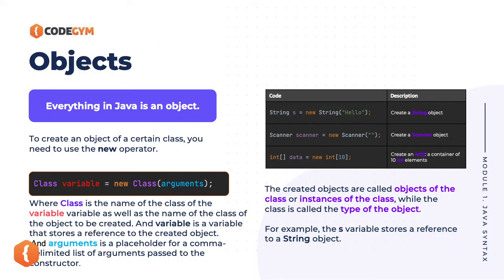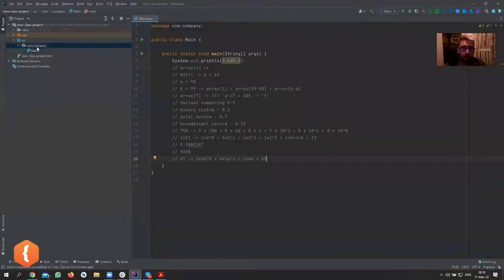You've already seen how we create a String or a Scanner using the new keyword, and an array as well. That's basically telling Java you need some place in memory to store something. In Java, you only have around five to seven primitive types — all the other types are objects. So today we're going to be creating some objects of our own to show you how that's done.